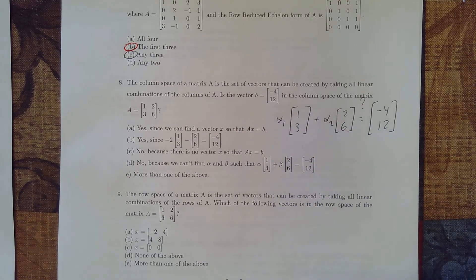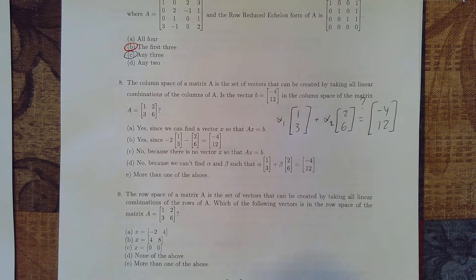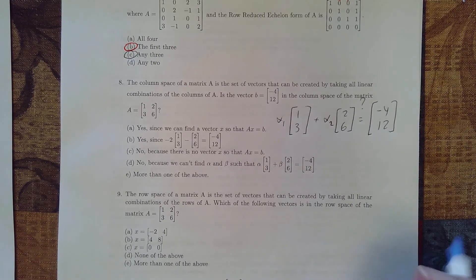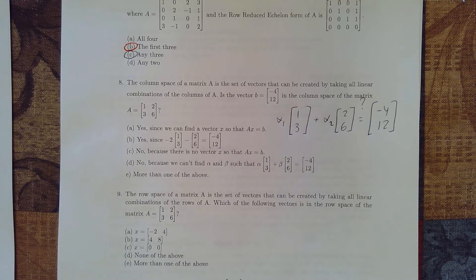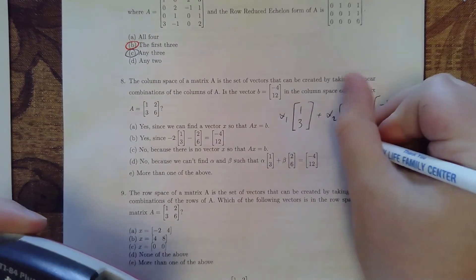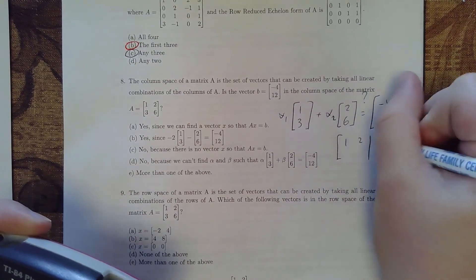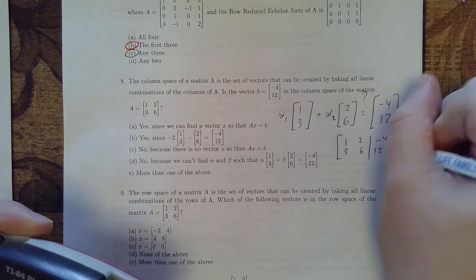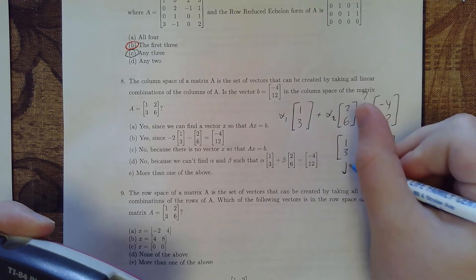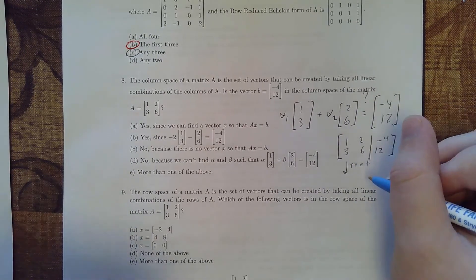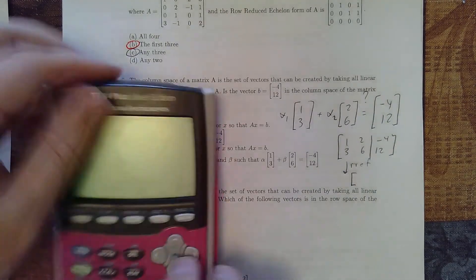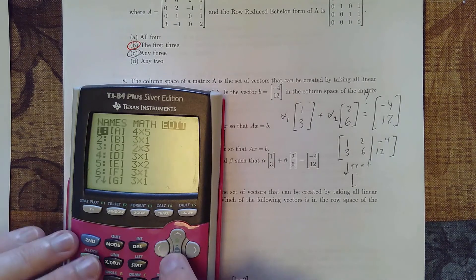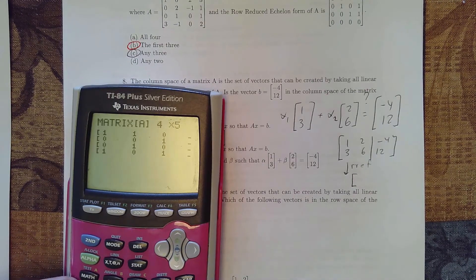So the column space is going to be the question of can we satisfy this linear combination? So these next two are going to ask about some slightly different linear combinations. So we want to know kind of which of these is the best answer here. So if we wanted to solve this system, what we would do is we would take 1, 2, negative 4, 3, 6, 12. We would find its reduced row echelon form.